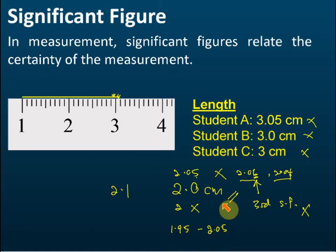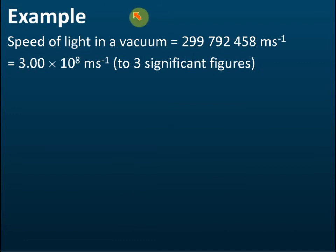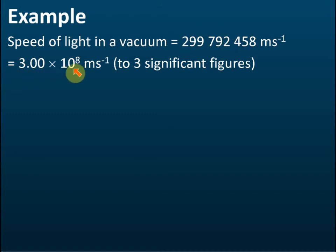In physics, the number of significant figures is very important. In Paper 3, if you give your reading as 3.05 when it should be 3.0, you are going to lose marks. Now let's see another example. The speed of light in vacuum is 2.997,924,458 meters per second. This is a very accurate figure, but in most textbooks they give the speed of light as 3.00 × 10⁸ or even just 3 × 10⁸ meters per second — one, two, or three significant figures — not all nine.